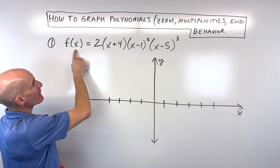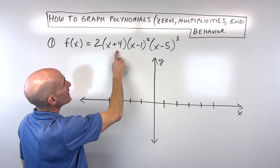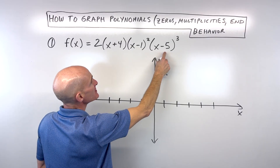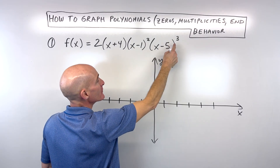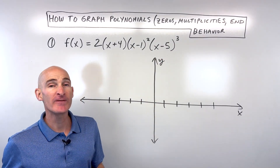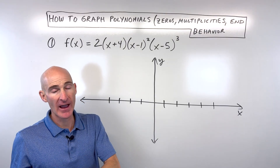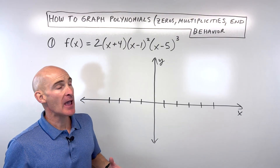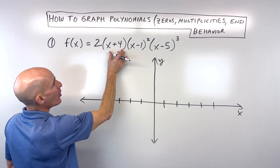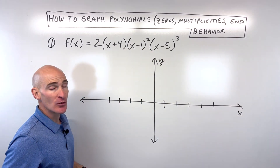So this first one, we have f of x equals 2 times x plus 4 times x minus 1 squared times x minus 5 cubed. Now this is already in factored form. If yours is not in factored form, you can factor it first. Then what you want to do to find the zeros is set all these factors equal to zero.